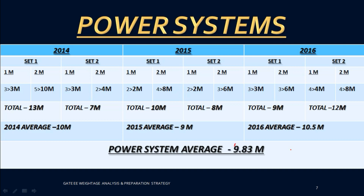Next is Power Systems, the second most important subject with a weightage of 9.83. The 2014 average was around 10 to 10.5 marks. Concentrate more on load flow, stability analysis, and similar tough topics within Power Systems.